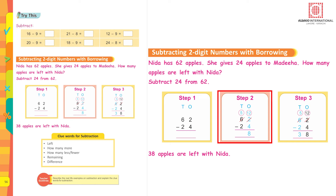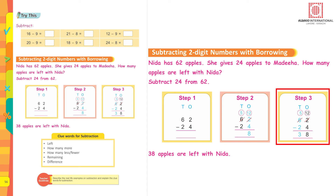We cannot subtract 4 ones from 2 ones, so we borrow one ten from 6 tens. We are left with 5 tens, and we make 12 ones (10 plus 2). Now subtract 4 ones from 12 ones: you get 8. Then 5 tens minus 2 tens is 3. The answer is 38 — 38 apples are left with Nida.